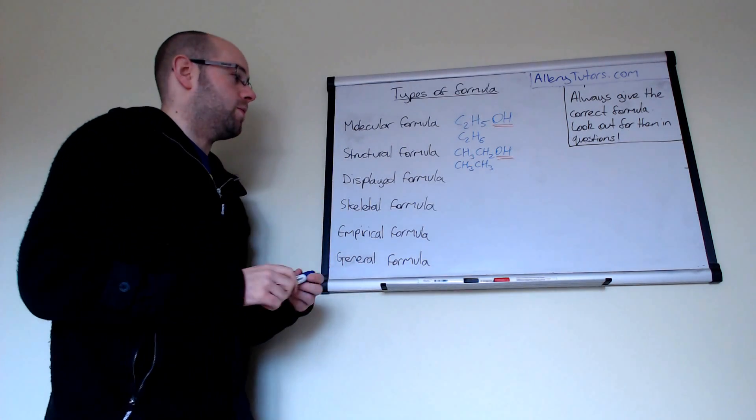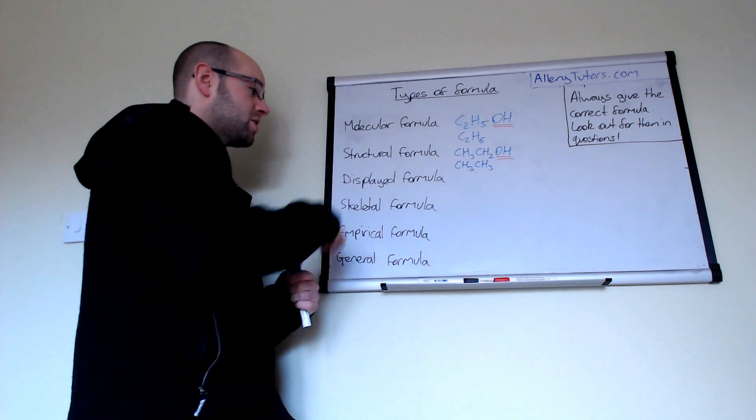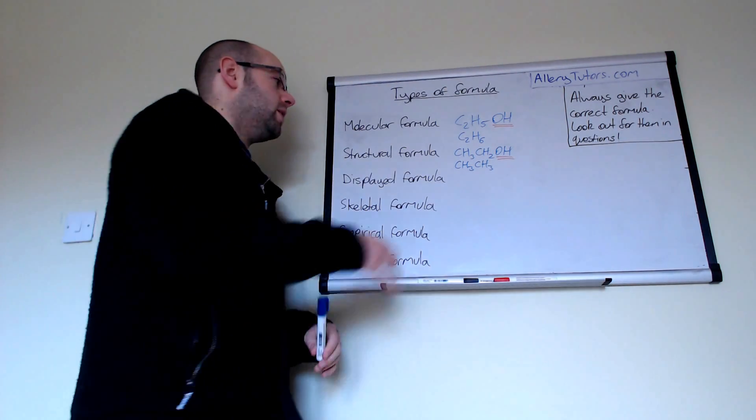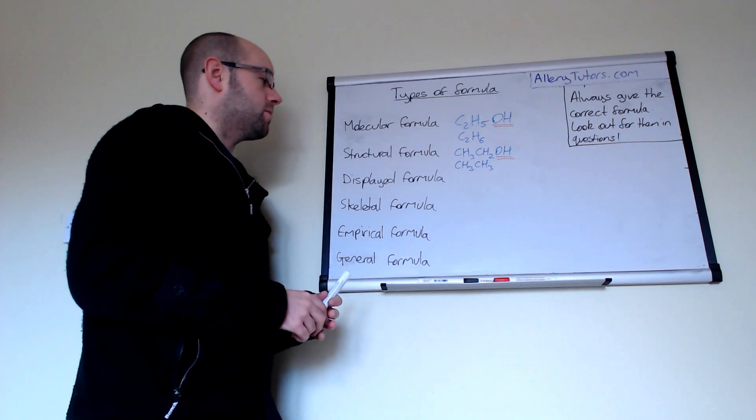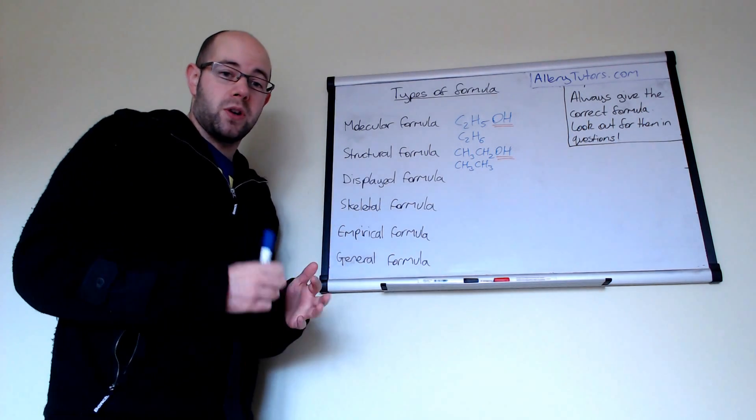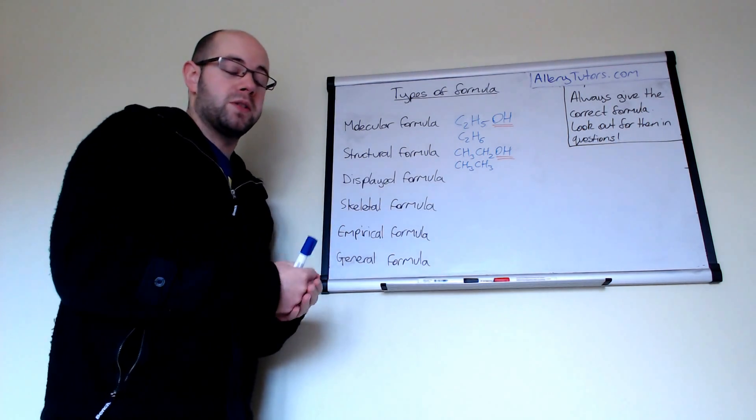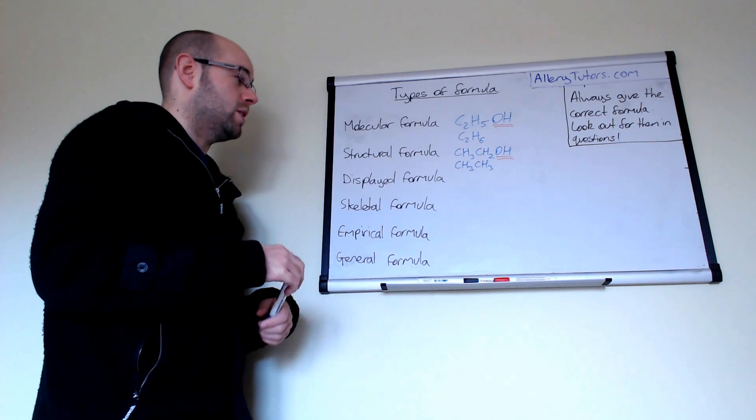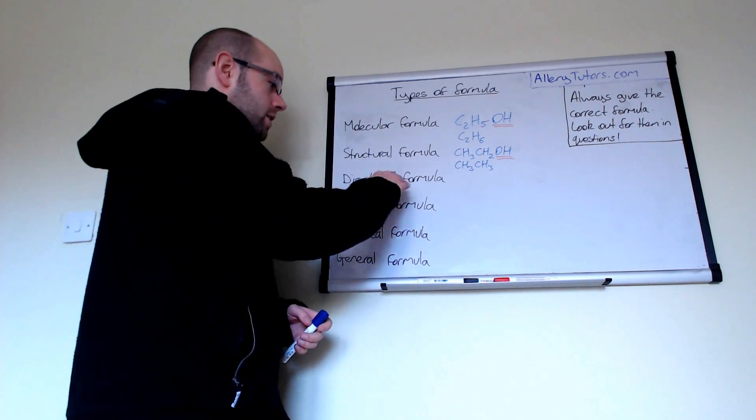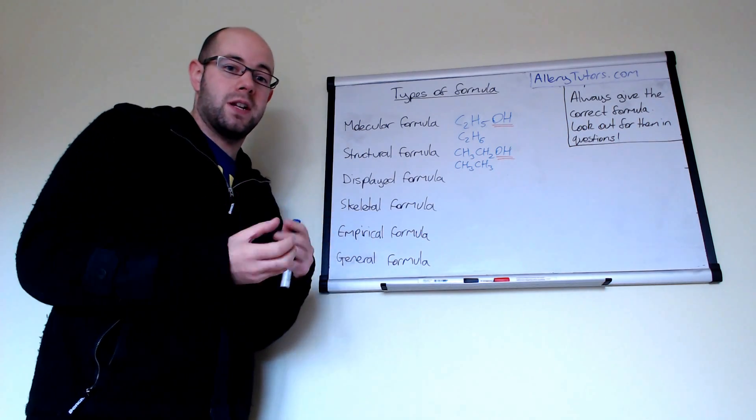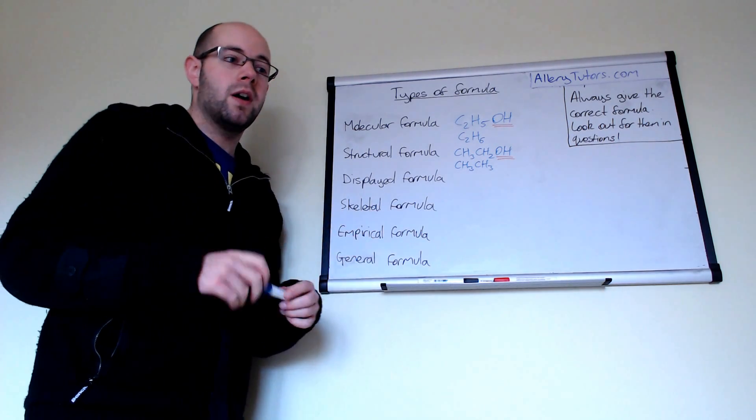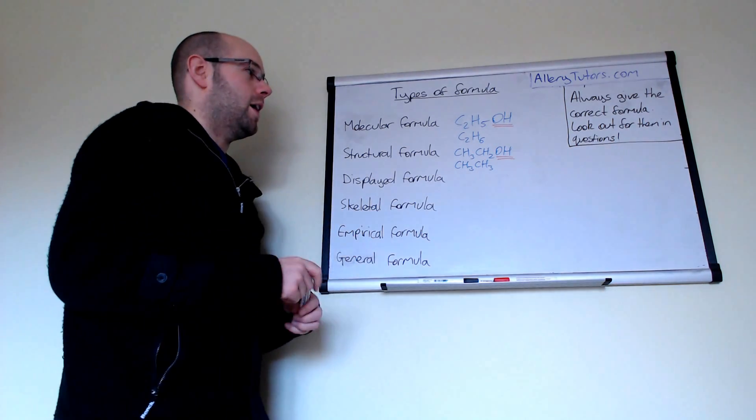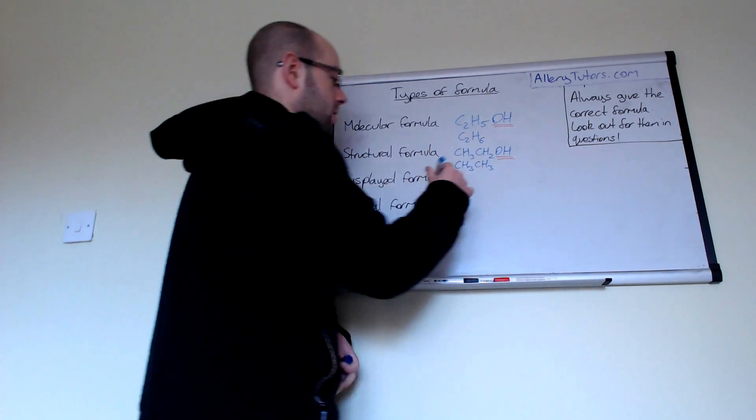The displayed formula is a little bit more involved. With displayed formula you've got to display all of your bonds and this can take a short while to write out, it's a little bit more long-winded but it's very clear. The displayed formula shows the clarity and exactly where bonds are.